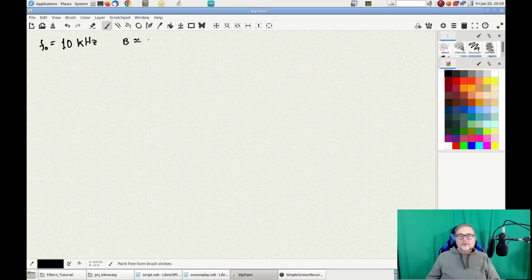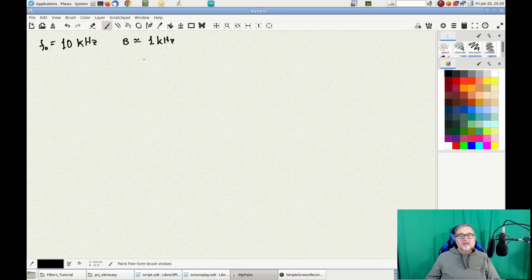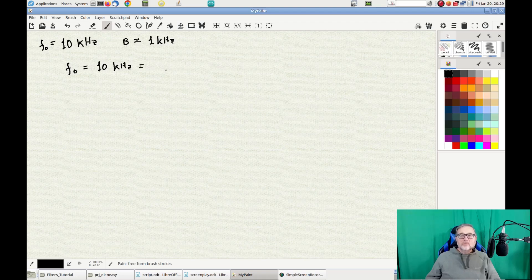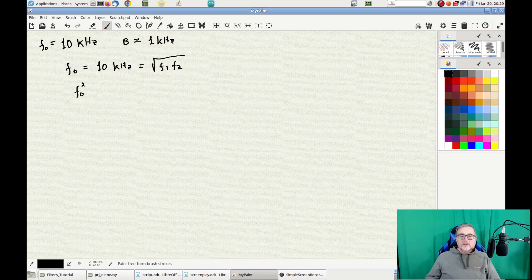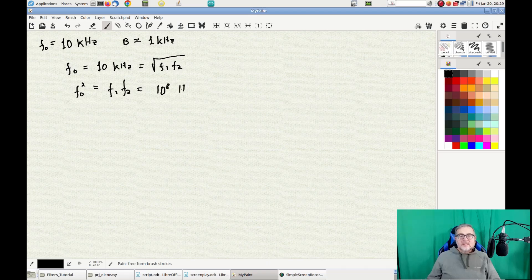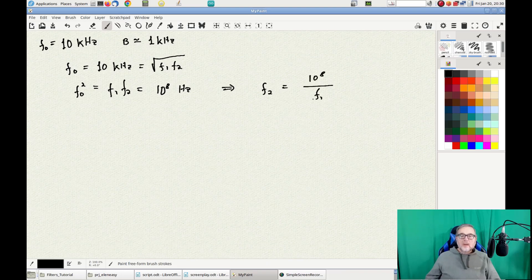So, let's assume we want to design a filter centered at 10 kHz with a band of about 1 kHz. This means that square root of F1 times F2 equals 10 kHz. To remove the square root from this expression, we need to square all the members of this equation. Then we can express F2 as a function of F1, like this, where the numerator is the square of 10 kHz.